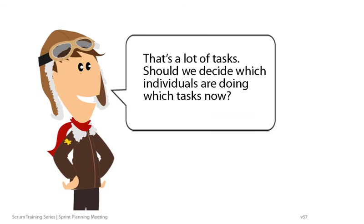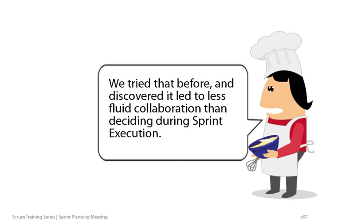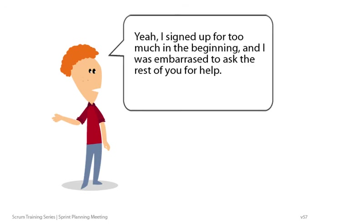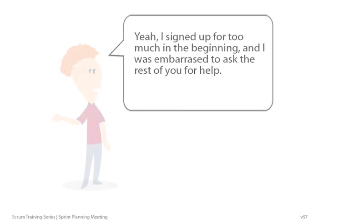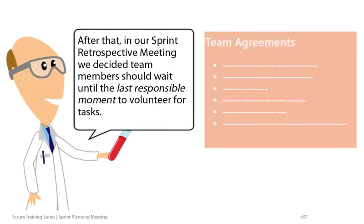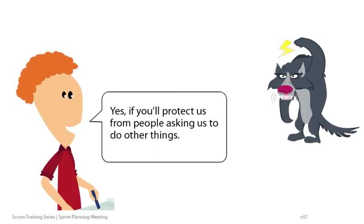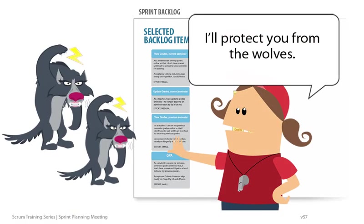That's a lot of tasks. Should we decide which individuals are doing which tasks now? We tried that before and discovered it led to less fluid collaboration than deciding during sprint execution. I signed up for too much in the beginning and was embarrassed to ask the rest of you for help. After that, in our sprint retrospective meeting, we decided team members should wait until the last responsible moment to volunteer for tasks. One last check — are you ready to attempt these four PBIs as a team, even if they turn out to require different tasks? Yes, if you'll protect us from people asking us to do other things. I'll protect you from the wolves.